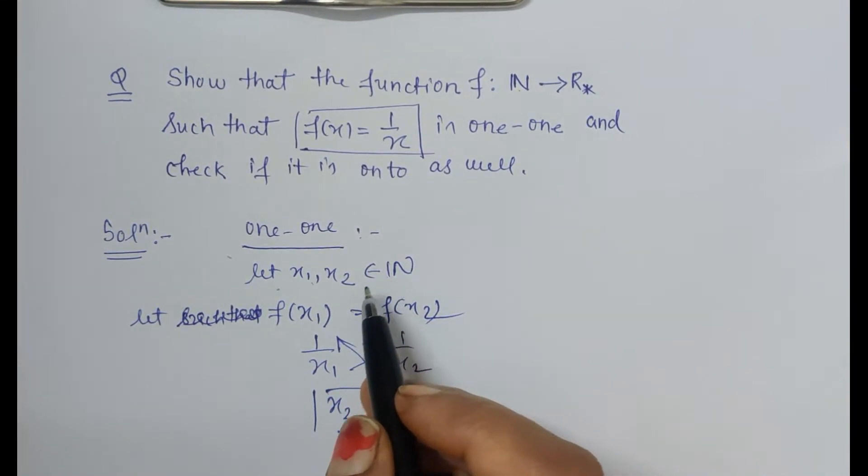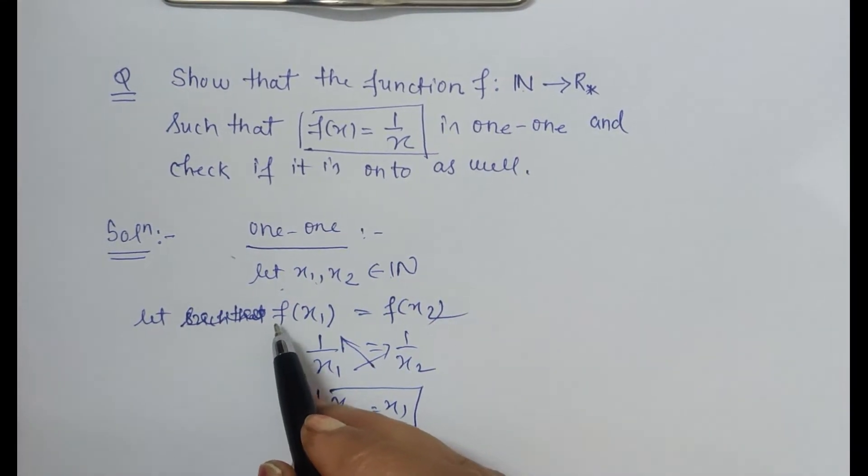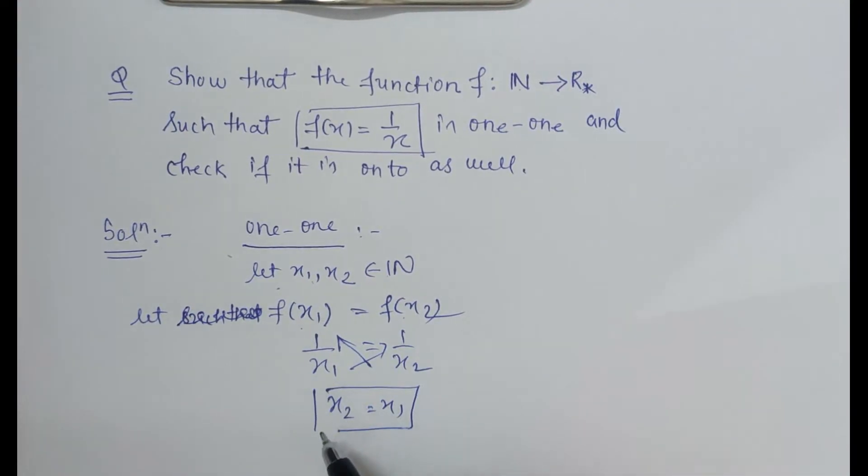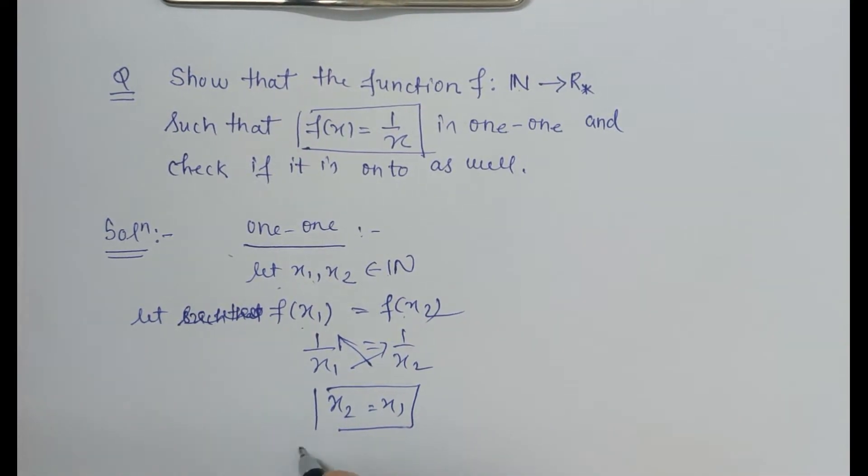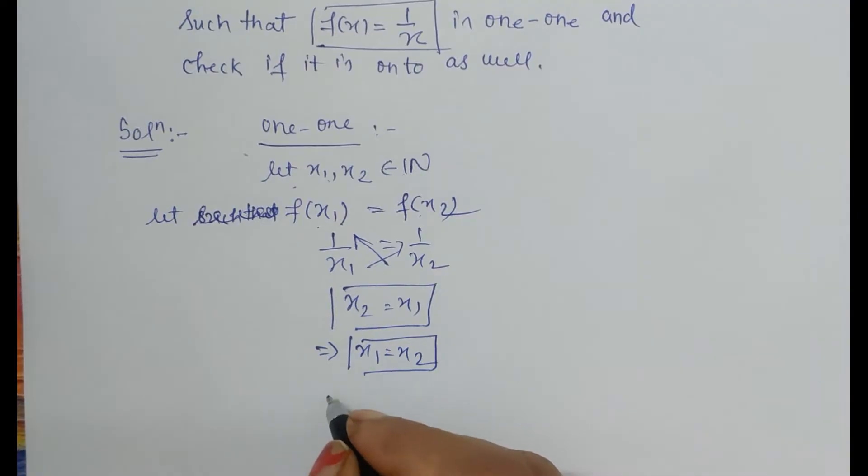And this is what we always wanted for proving one-one: that if f(x1) equals f(x2), we get the result x1 equals x2. That means it is one-one.